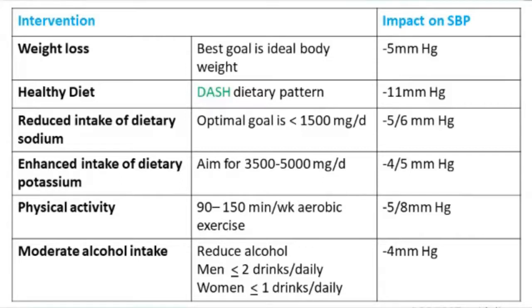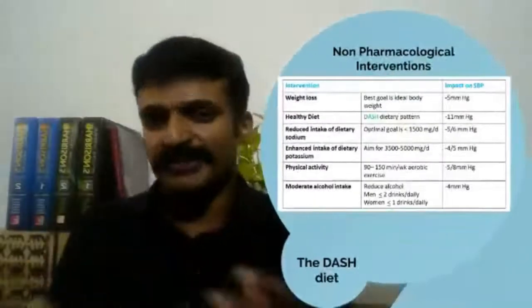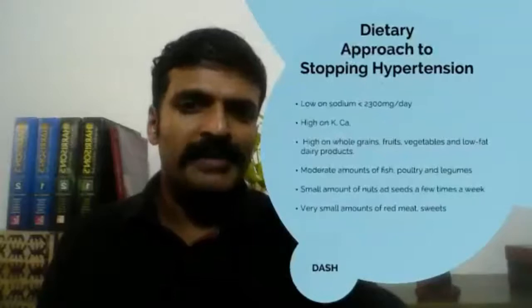150 minutes of brisk walking per week is the minimum effective amount. You don't need to ask an elderly patient to start running — the blood pressure benefit from brisk walking 150 minutes a week is the same as that of a runner. The runner may get additional benefits like better muscle mass and insulin sensitivity, but for blood pressure control and cardiovascular mortality, 150 minutes of brisk walking is sufficient. Alcohol should be reduced to less than two drinks per day in men and less than one drink per day in women.